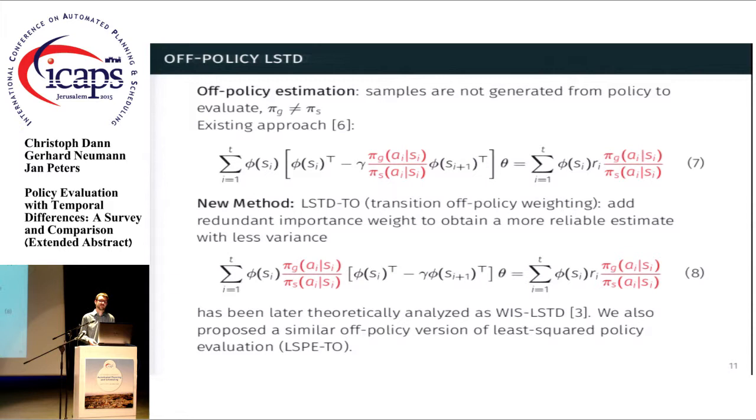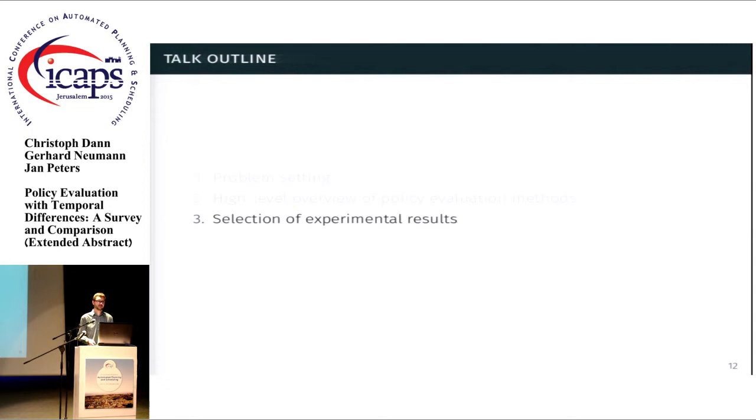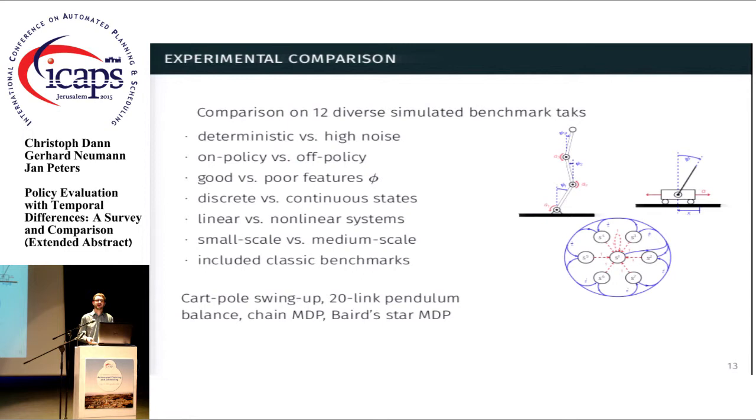We also propose a similar off-policy weighting strategy, which we call transition off-policy weighting, for the least squares policy evaluation algorithm called LSPE. So let's now quickly look at the experimental results. We want to compare the methods on various benchmarks. So we picked 12 benchmarks that are diverse, but that are still somewhat manageable to us, so that we can compute the actual mean squared error,